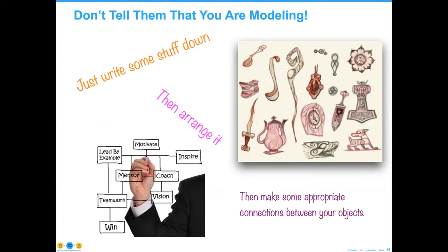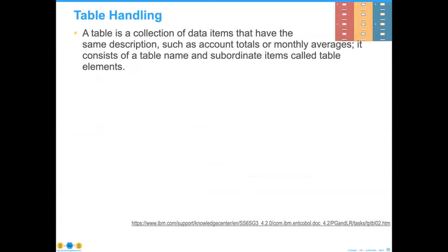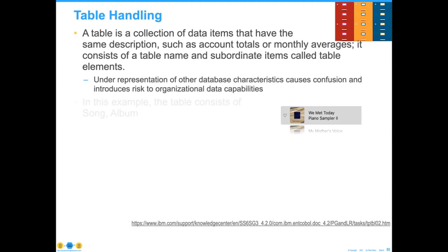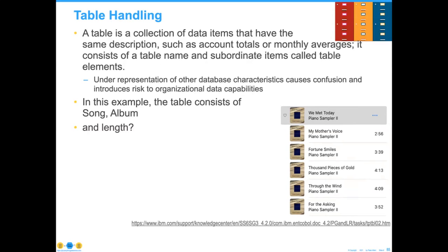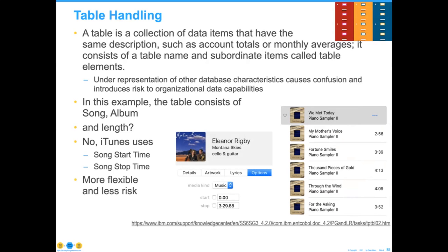Many people ask: how do you start doing data models if none of the people in the meeting know anything about data models? The answer is: don't tell them you're doing data modeling. Just write some stuff down, arrange it a bit, and then make some appropriate connections. Here's a quick little exercise on table handling that's absolutely critical. The table is the collection of data items we put into the model. Here's an example from the old iTunes or now called Music application — the song consists of album and song. The length of a song is not encoded on a CD, but start time and stop time let us figure out how long the song is.